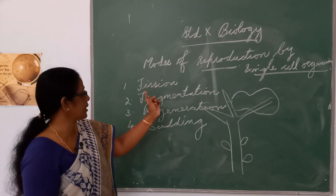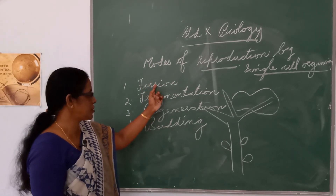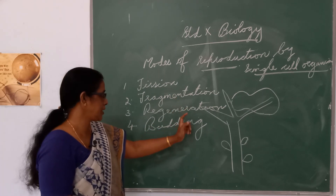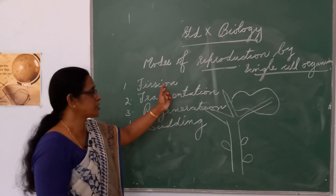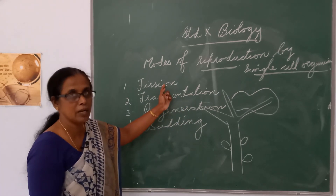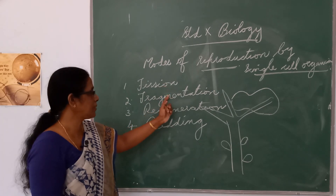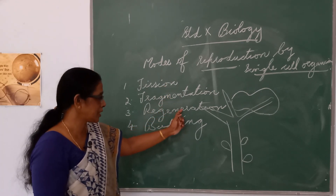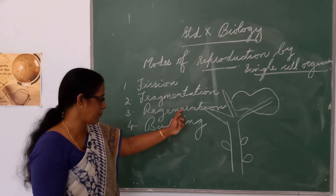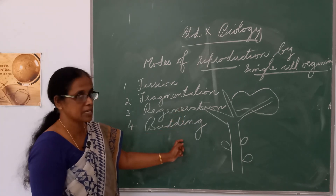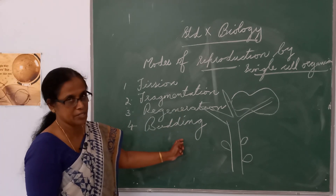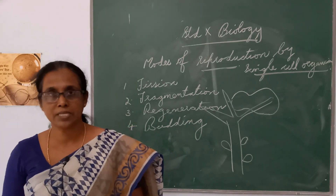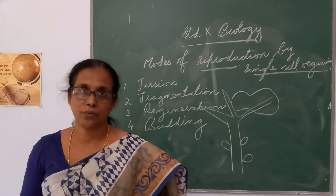So these are the different processes of reproduction: fission — example amoeba; fragmentation — example Spirogyra; regeneration — example planaria; budding — example hydra. We will study the next portion in the zoom class. Thank you all.